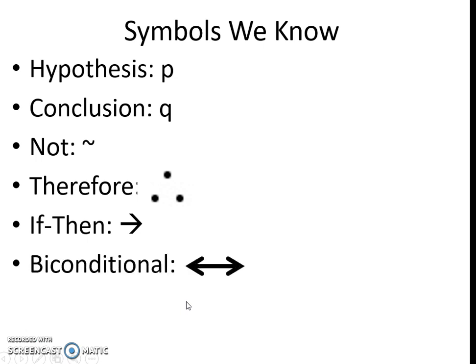Biconditional is two arrows each way — looks like a number line, a short number line. Please write these symbols next to each word.